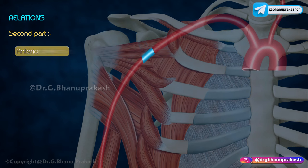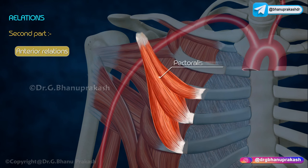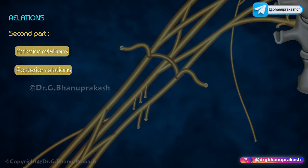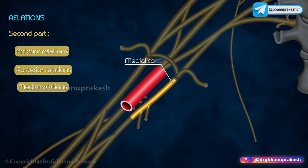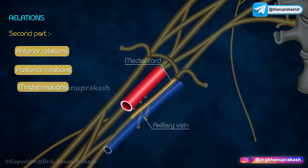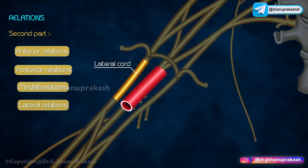The second part is related anteriorly to the pectoralis minor, posteriorly to the posterior cord of the brachial plexus and the subscapularis, medially to the medial cord of the brachial plexus and axillary vein, and laterally to the lateral cord of the brachial plexus.